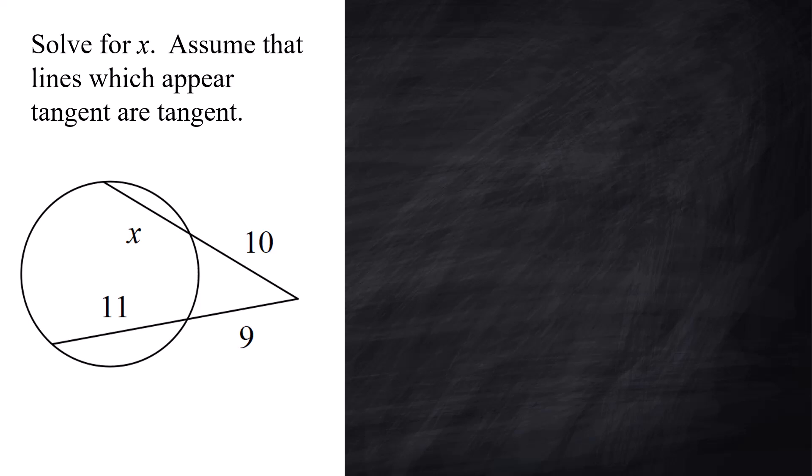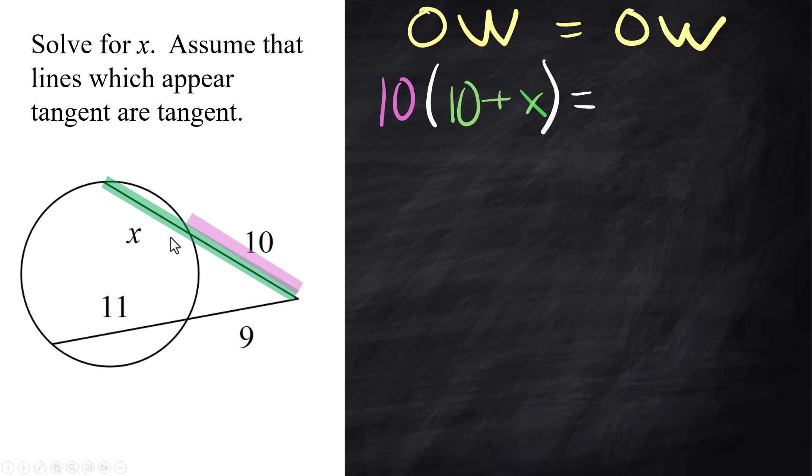All right, let's do a problem. Solve for x. Assume that lines that appear to be tangent are tangent. We're going to do one of those with a tangent line, but not right away. All right, first of all, this is my little helper, ow-ow. So I know I need to set up outside times the whole thing. So for this first line, it's going to be the 10 on the outside times, not the x. That's what your brain is going to want to do. Be careful. You got to get the whole thing. The whole thing is this 10 plus the x. The x is on the inside. So that is the whole thing. So the other ow is going to be the 9 times the 9 plus 11. You can add that together in your head if you want to, but I'm just going to write it out to be super clear. So 9 times 9 plus 11.